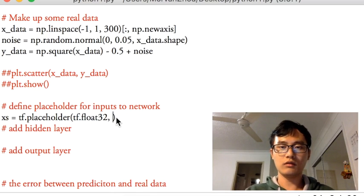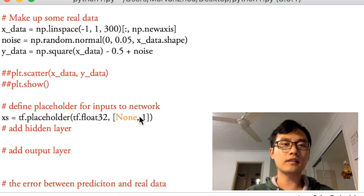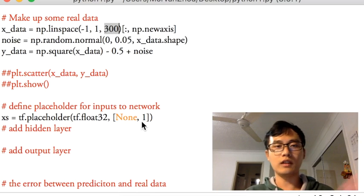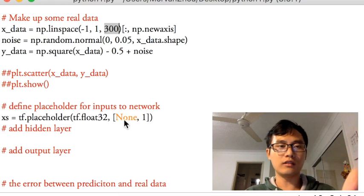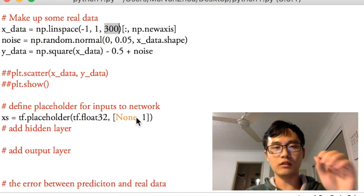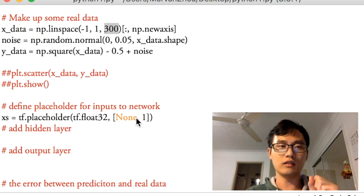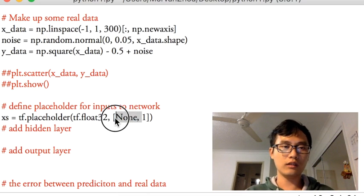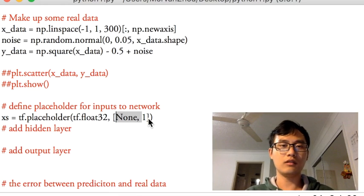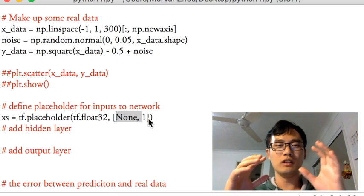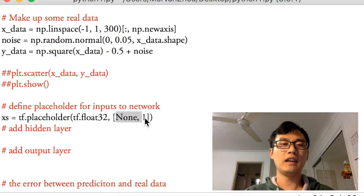The placeholder is tf.placeholder.float32 and the shape is [None, 1]. This means the None is representing the number of samples. So whatever number of samples passed to the placeholder, the placeholder can hold on that number of samples.